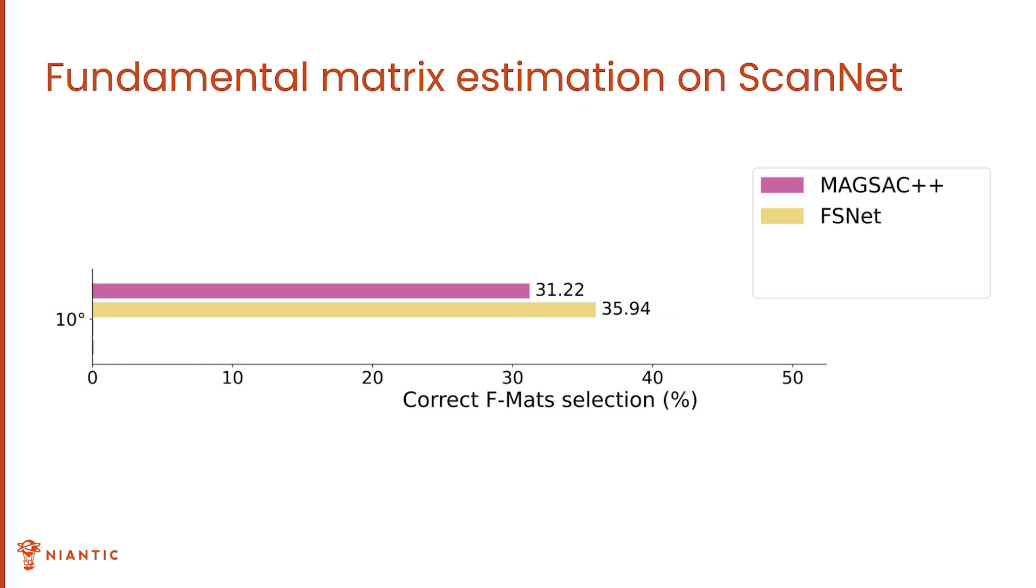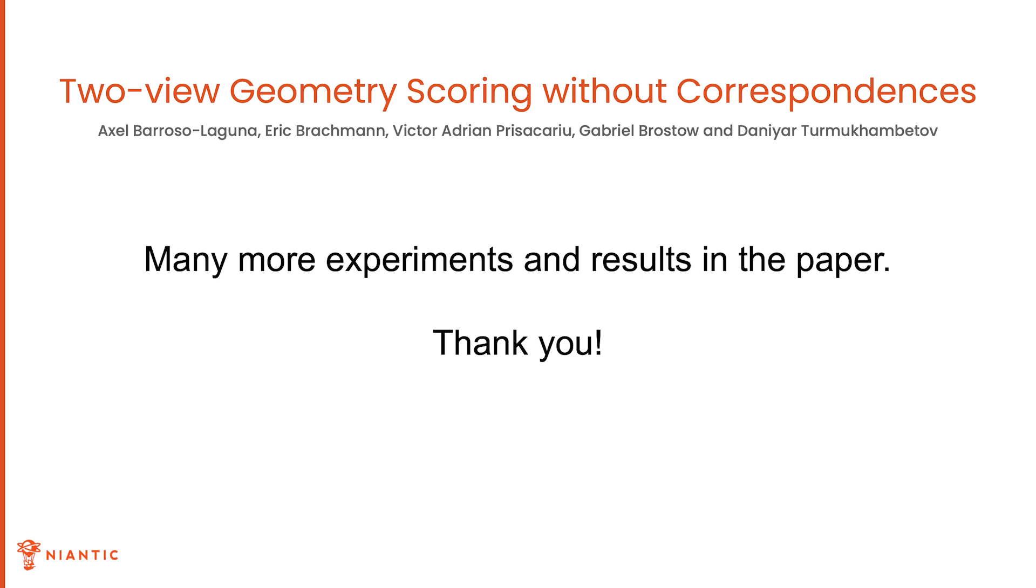Our analyses show that the inlier heuristics are useful, and instead of disregarding them, we propose different strategies to combine them with FSNet. We propose a correspondence filter that looks at the number of absolute correspondences to decide whether we use inlier counting or FSNet scoring. We also introduce the candidate filter, which uses inlier counting to discard low inlier hypotheses and uses FSNet to refine the final decision. Thank you for watching, and please see the paper for more.